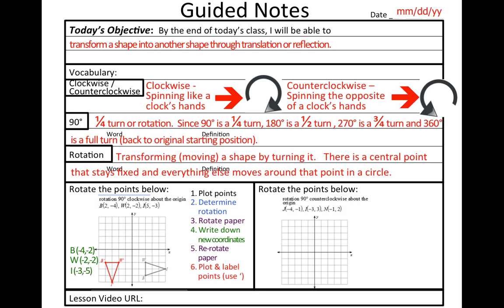Let's do one more problem. Exact same plan. Plot the points. Determine the rotation. This one is 90 degrees counterclockwise. So I'm going to rotate my paper 90 degrees counterclockwise.